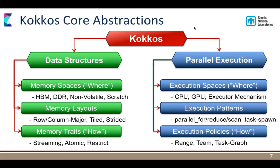The heart of what Kokkos is, is these abstractions — two sets: one for data structures, and one for parallel execution. The parallel execution abstractions include execution spaces (a way of saying this should execute on the GPU, this on the CPU), execution patterns (parallel loop, parallel reduction, scan, task graphs), and execution policies which control how you execute these patterns. In Kokkos, these include the range policy, team policy, task graph, and options like dynamic vs. static scheduling.